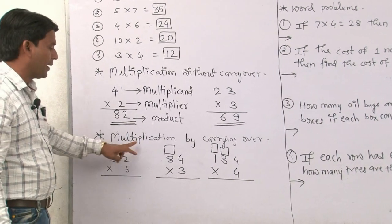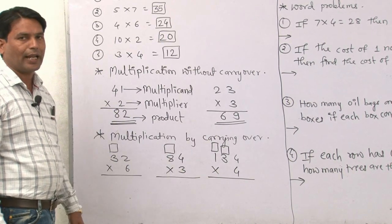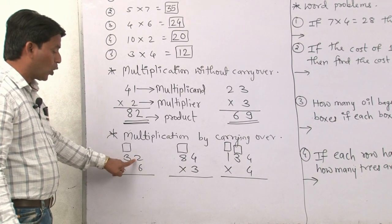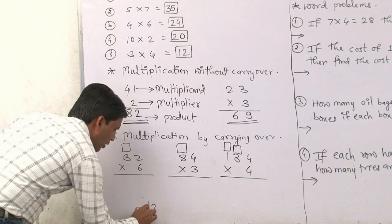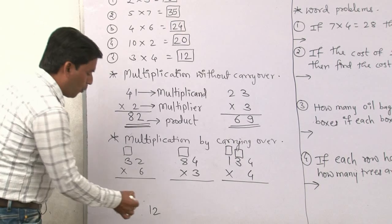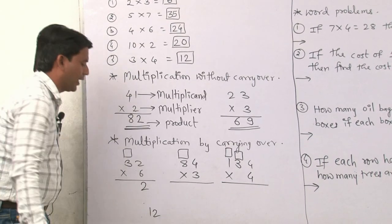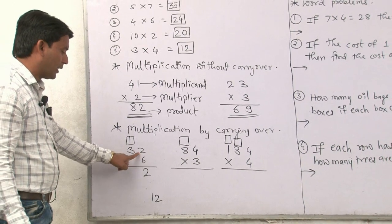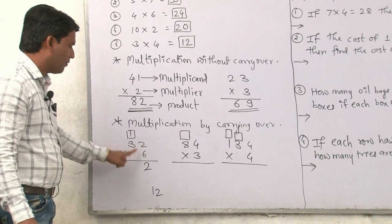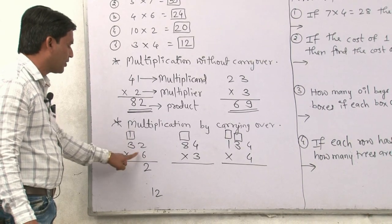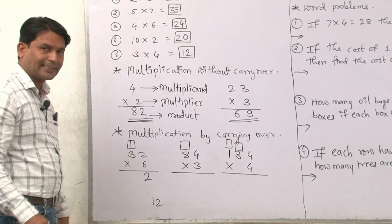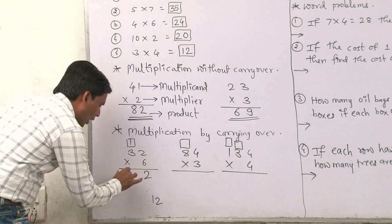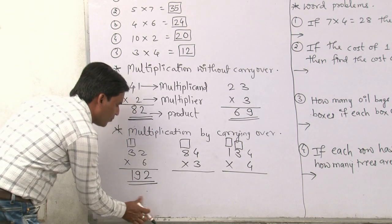After that, multiplication by carrying over. We multiply 6 by 2: 6 twos are 12. When a two-digit number comes, the ones place digit is written here and the tens place digit is carried over in the box. So 2 here and 1 carry over. Then multiply 6 by 3: 6 threes are 18, plus the carried 1 makes 19. So the answer is 192.